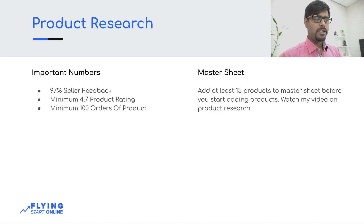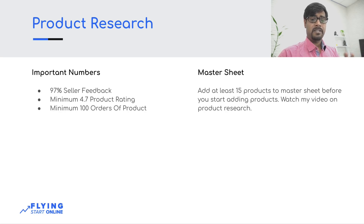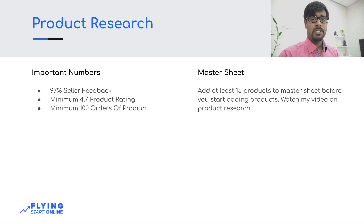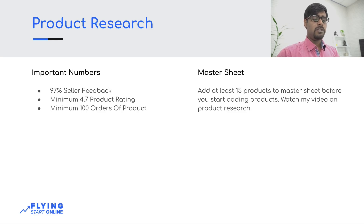Now I will talk about product research — here you have to focus on some important numbers. If you haven't watched my product research video, there are two previous videos. There is 97% seller feedback which is very important — it should be a minimum 4.7 rating. I estimate 100 orders minimum for the product. But if there is a new product published just 4 days ago on AliExpress, it has 100 orders but you won't get reviews because delivery hasn't happened yet. So keep a little flexibility — if there are 100 orders and seller feedback is 97%, that person is fine.